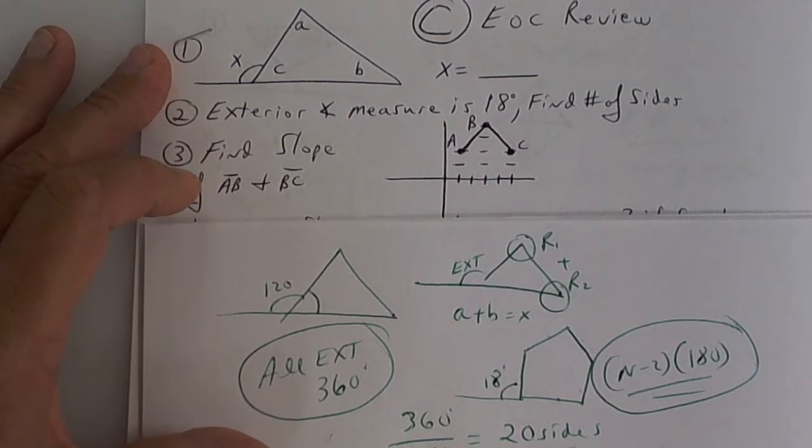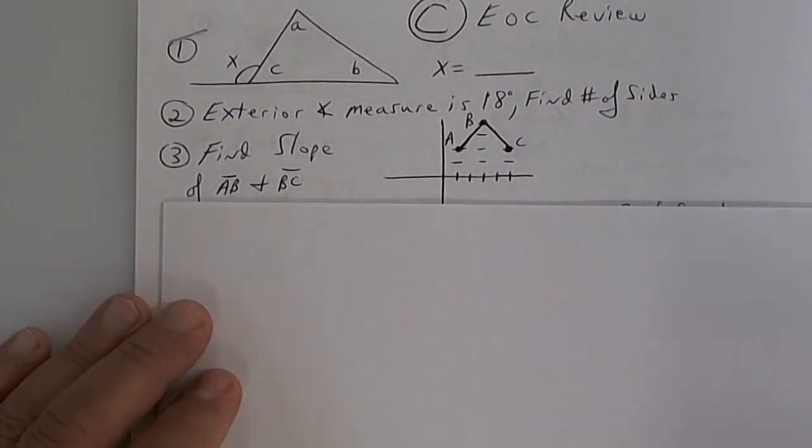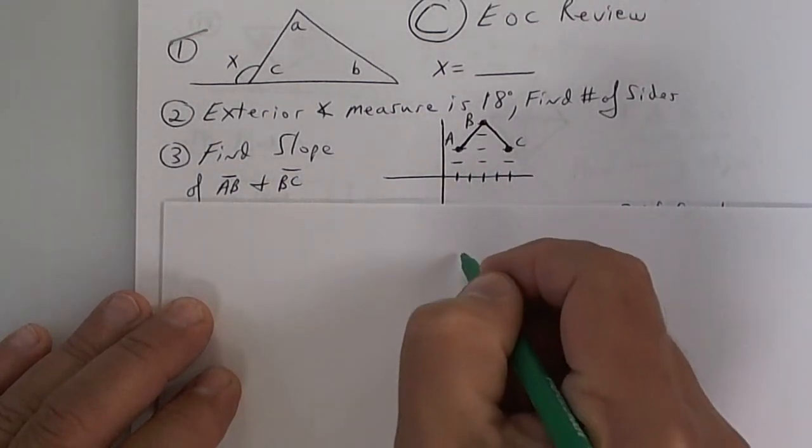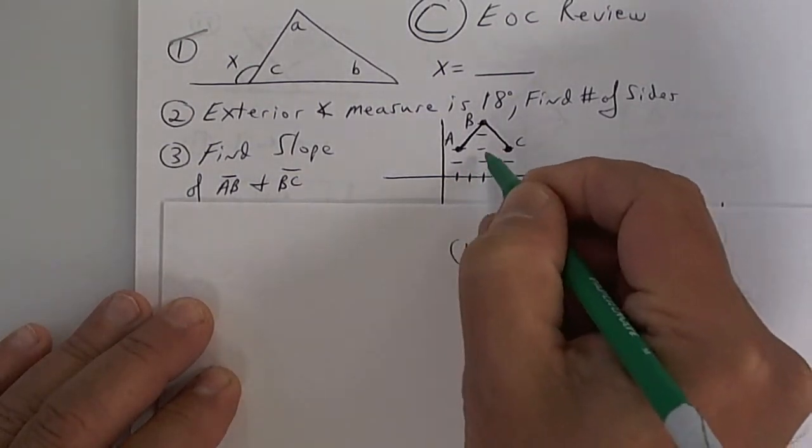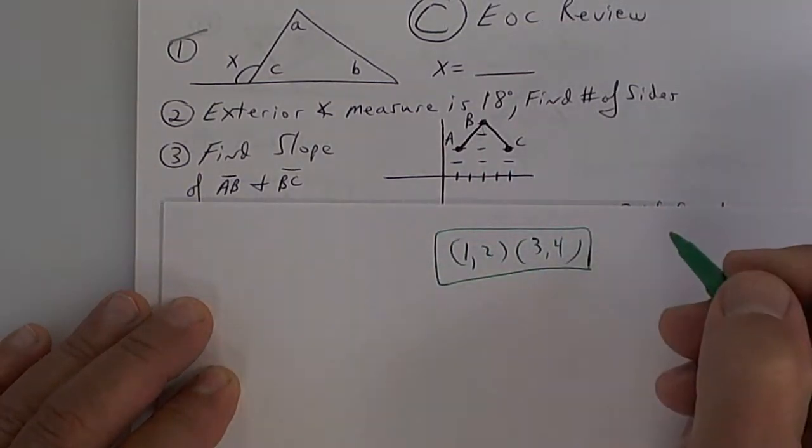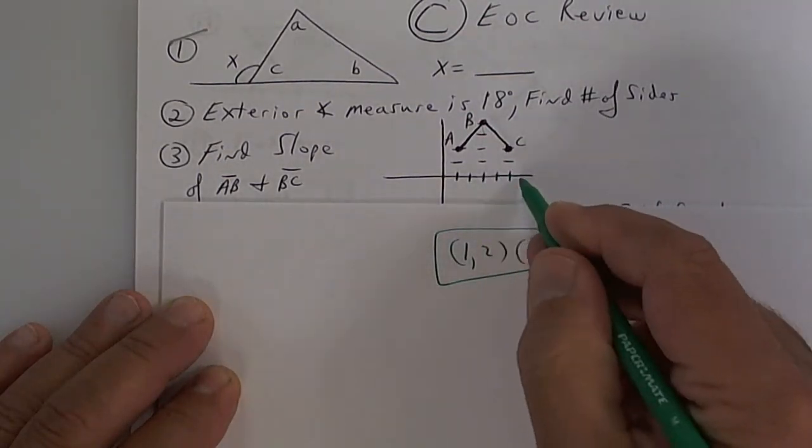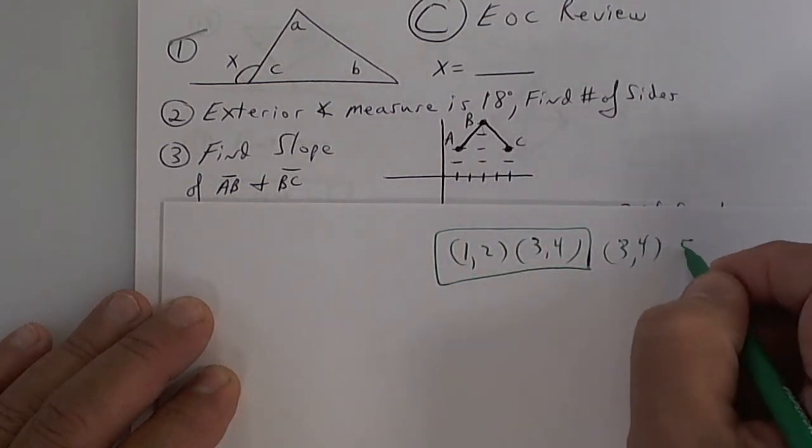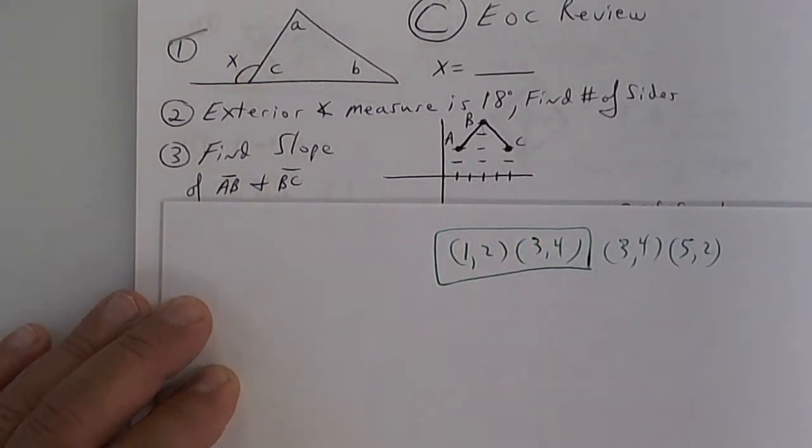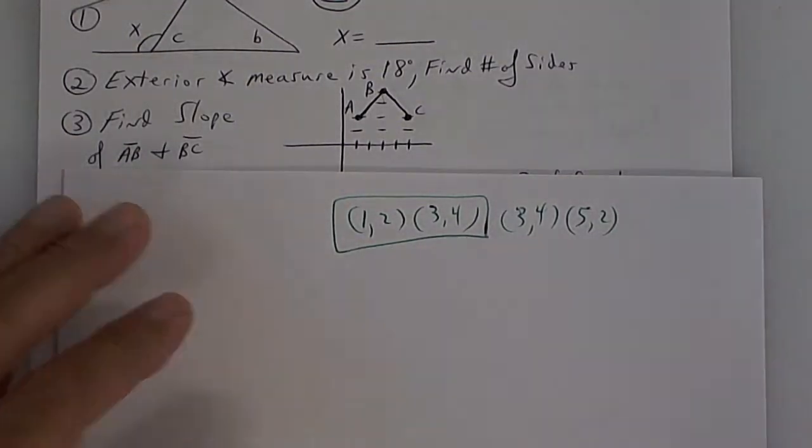The slope of AB and BC. We did slope yesterday. But to do it, you would take AB, which is over 1 up 2. And then the other point is over 3 up 4. And then you've got to find the slope here. And then you've got to go BC. B is 3, 4, but C is over 5 up 2. So first of all, you've got to be able to find the points.